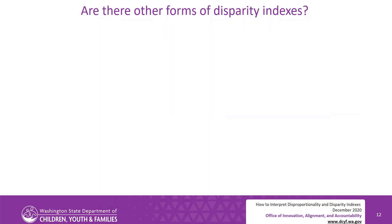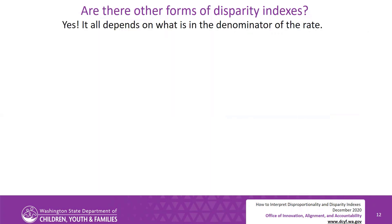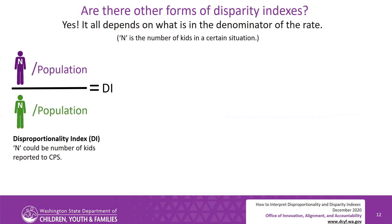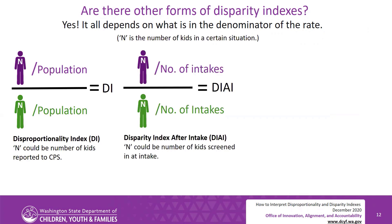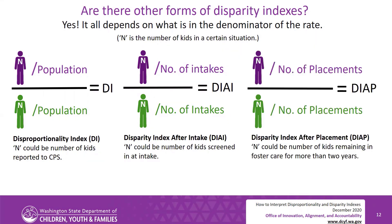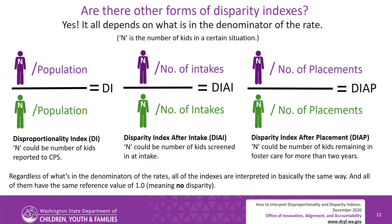Are there other forms of disparity indexes? Yes — it all depends on what is in the denominator of the rate. N is the number of kids in a certain situation. For the disproportionality index, DI, N could be the number of kids reported to CPS. For the disparity index after intake, DI-AI, N could be the number of kids screened in at intake. For the disparity index after placement, DI-AP, N could be the number of kids remaining in foster care for more than two years. Regardless of what's in the denominators of the rates, all of the indexes are interpreted in basically the same way, and all have the same reference value of 1.0, meaning no disparity.